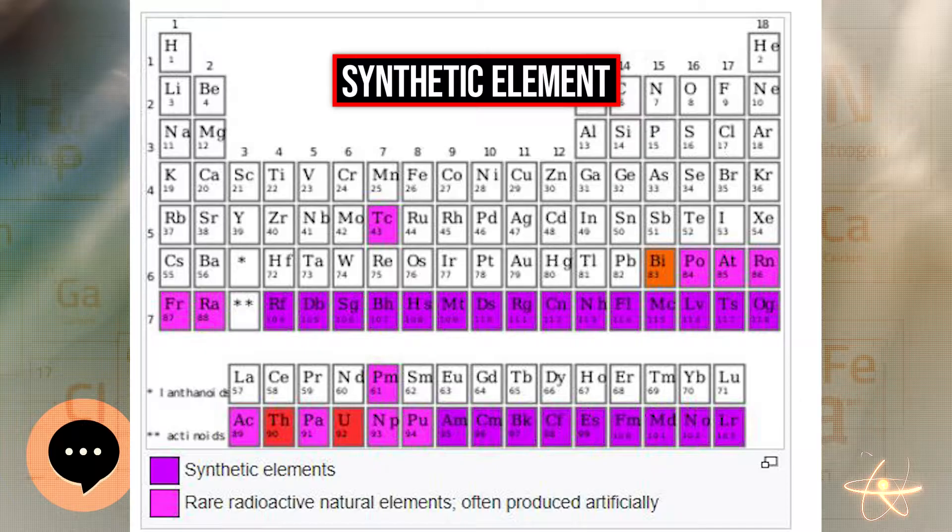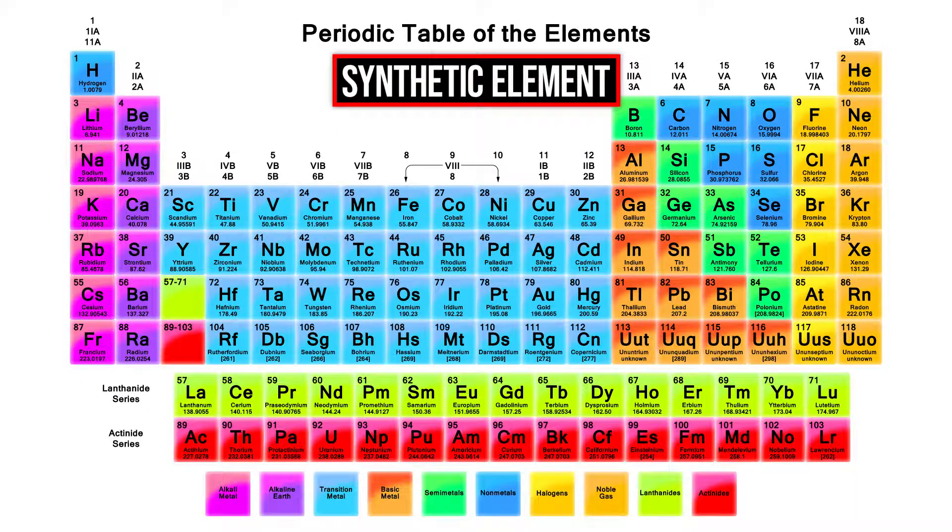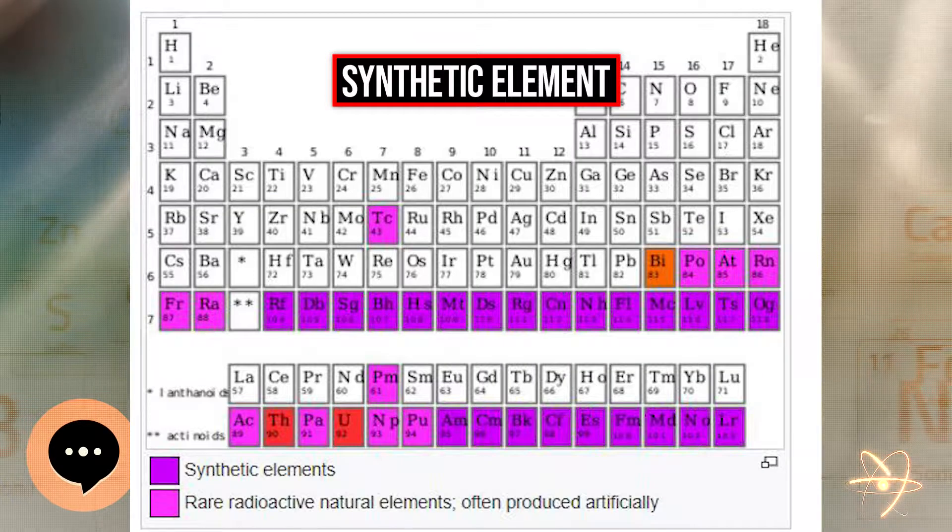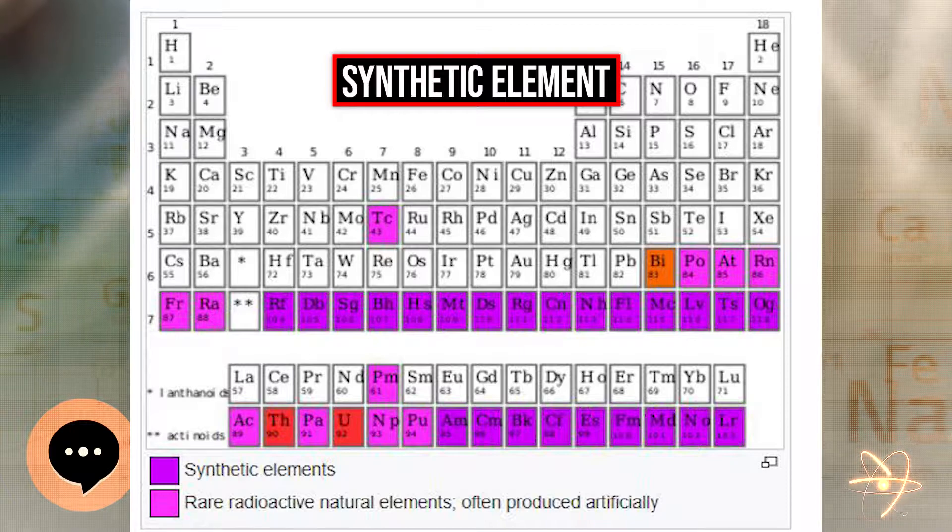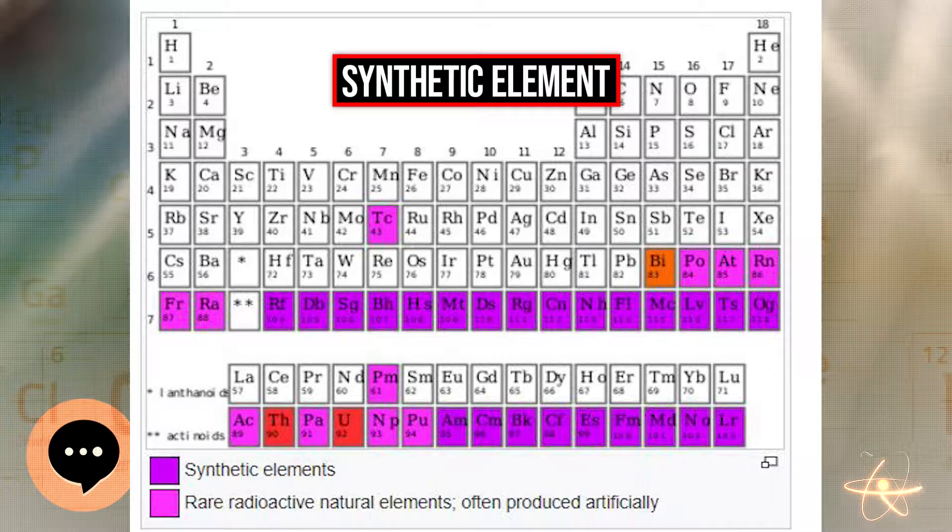Meanwhile, the American team had discovered seaborgium, and the next six elements had been discovered by a German team: bohrium, hassium, meitnerium, darmstadtium, roentgenium, and copernicium. Element 113, nihonium, was discovered by a Japanese team.